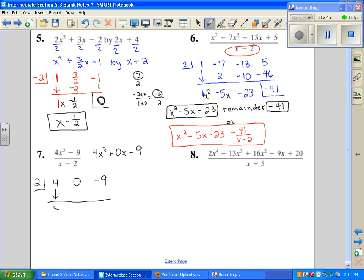So here we go, we've got four, two times four is eight, add down, zero plus eight is eight. Now we're going to multiply again, two times eight is sixteen. Add down, and we have a remainder of seven.